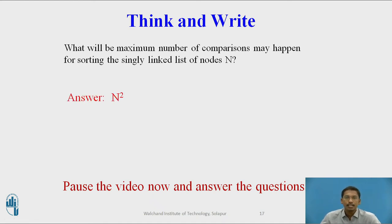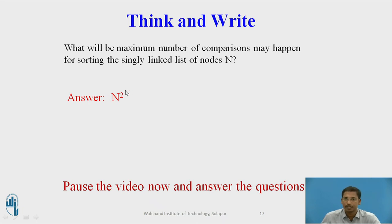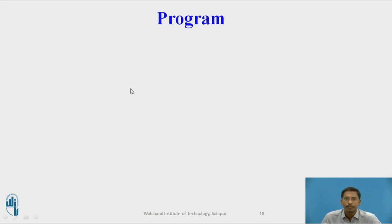The answer is: if a singly linked list contains n nodes, in selection sort each node is compared with all remaining nodes. So a maximum of n squared node comparisons are required, which is the time complexity of selection sort.